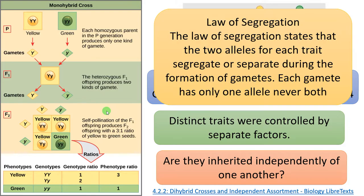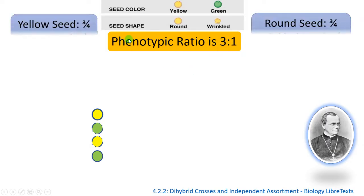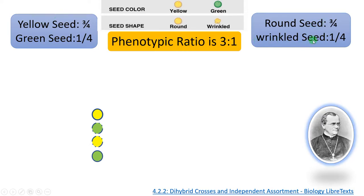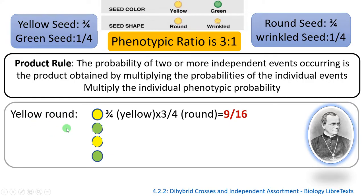The next question Mendel posed is: are these traits inherited independently of one another? Before conducting the next experiment, being an excellent mathematician, he used probability to predict what would happen if traits independently assort. He applied the product rule: the probability of two or more independent events occurring is the product obtained by multiplying the probabilities of individual events. The phenotypic ratio in the monohybrid cross for seed color is 3:1 and for seed shape is also 3:1. So he multiplied the individual phenotypic probabilities. For yellow round, if these two traits are independently segregating, the probability is 3/4 × 3/4.